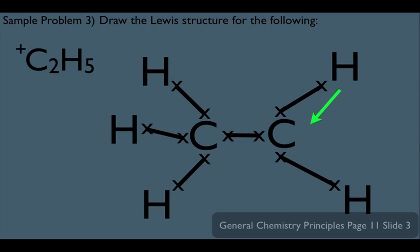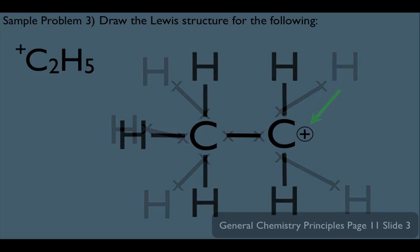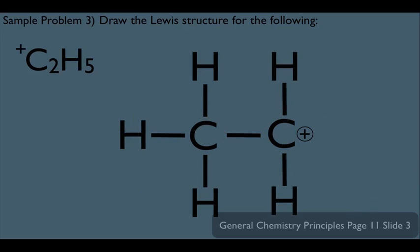However, remember, we've got to consider formal charge here. That carbon on the right now has three bonds only, and we know that in that particular case, that means he's going to have a plus one formal charge. Now, we have no more electrons to connect here. So this is basically it. Let's clean him up. Let's straighten him out. This ends up being your Lewis dot structure for this molecule.